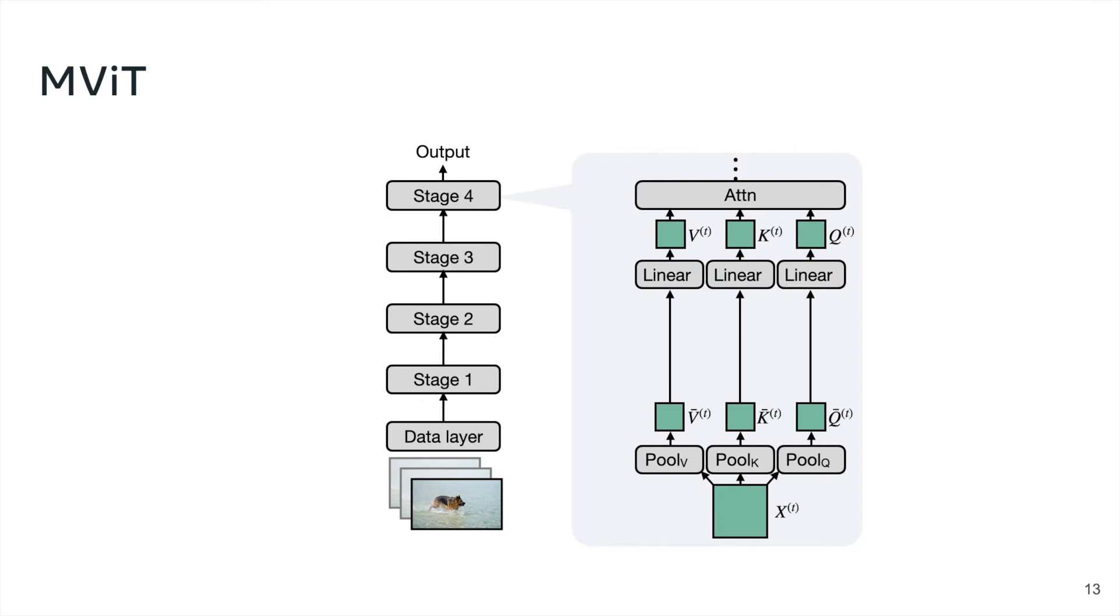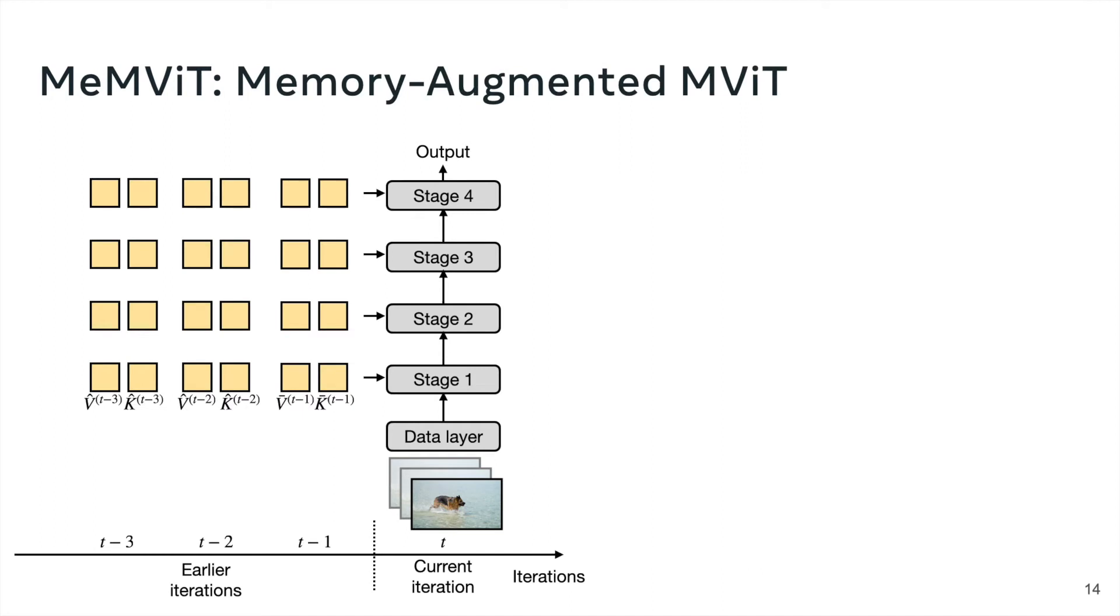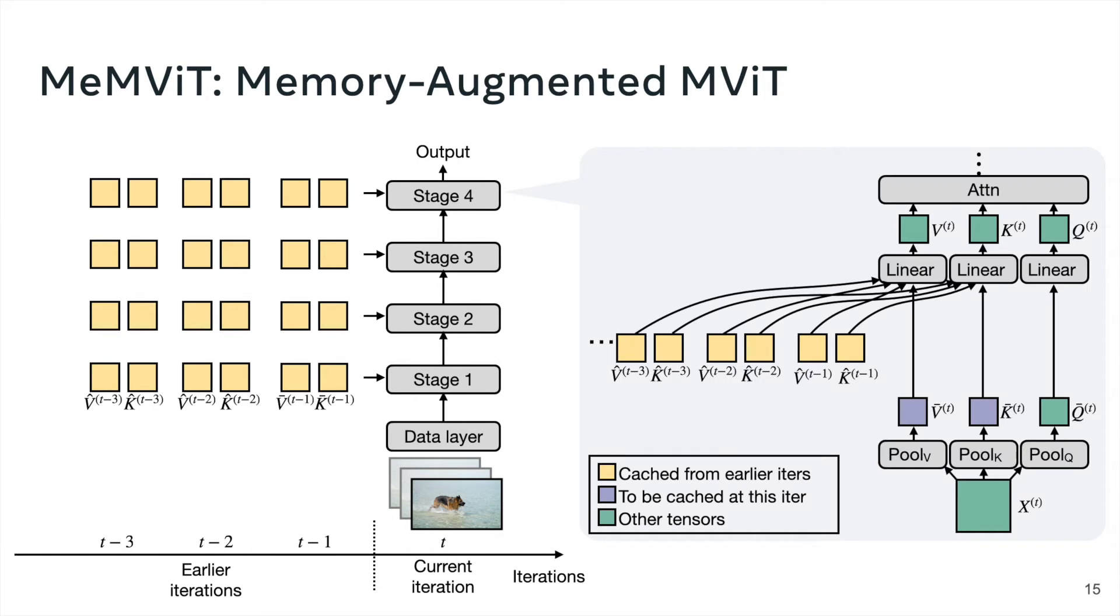Concretely, our implementation builds on top of an MVIT video model, which contains multiple stages of self-attention layers. We extend MVIT by additionally caching the keys and value tensors from prior iterations as memory, and extend the attention module to additionally attend to those key and value tensors for long-term context. In experiments, we find this strategy to be quite effective.